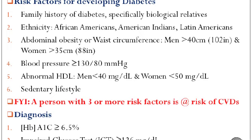Risk factors for developing diabetes include: family history of diabetes specifically from biological relatives; ethnicity such as African-Americans, American-Indians, and Latin-Americans; abdominal obesity or waist circumference of 40 inches (102 cm) for men and 35 inches (88 cm) for women; and blood pressure of 130/80 or greater.